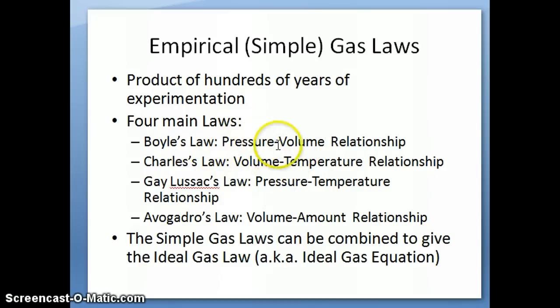Boyle's Law relates pressure and volume of a gas. Charles's Law relates volume and temperature. Gay-Lussac's relates pressure and temperature. And Avogadro's Law relates volume and number of moles or amount of gas. You'll see that we can take all of these four equations together, combine them into one equation, which is what we call the ideal gas equation or the ideal gas law. When we're discussing each of these laws, there are always certain properties that are held constant for this relationship to be observed.